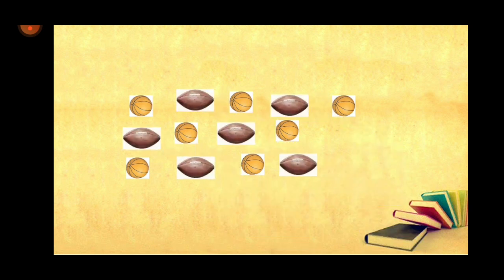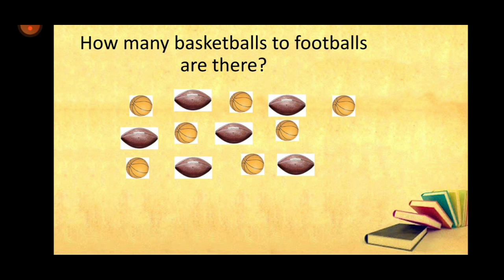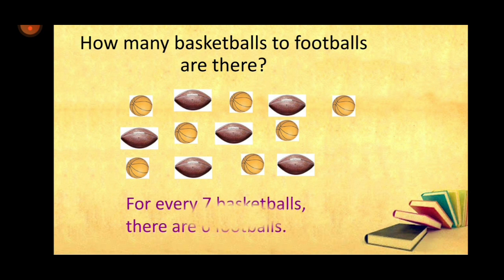Before we learn what is ratio, I want you to observe these pictures — a picture of basketballs and a picture of footballs. So my question is, how many basketballs to footballs are there? For every seven basketballs, there are six footballs.